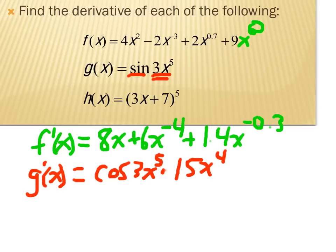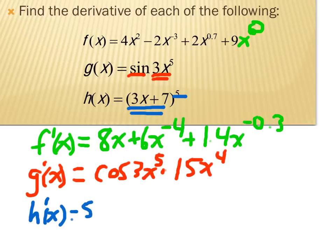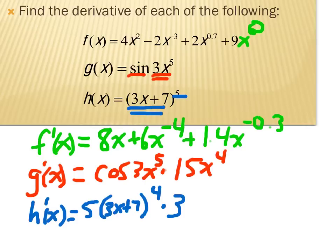The last problem is another chain rule that doesn't involve sine or cosine. To find h prime of x, the 5 is the outside function and 3x plus 7 is the inside. Derive the outside: 5 times whatever is inside to the fourth power, leaving 3x plus 7 alone. Then multiply by the derivative of the inside, which is 3. The derivative of 3x plus 7 is 3.